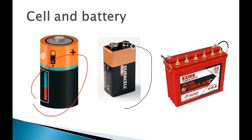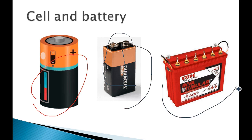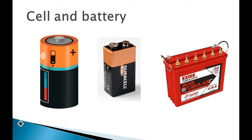That is your battery because there are two cells connected, so you can do more work. You can also see this in an inverter — those are your batteries, which give more voltage. So a cell is a single unit and a battery is a combination of cells.